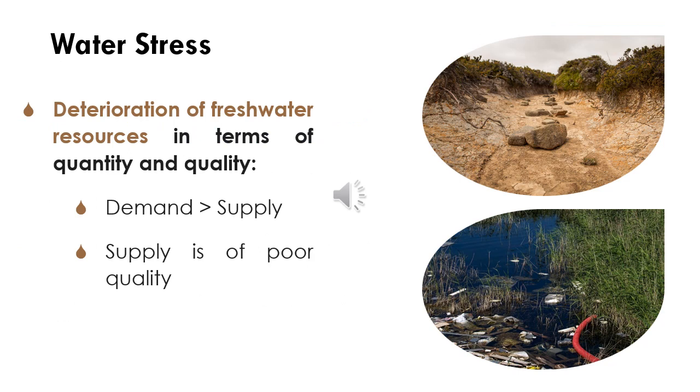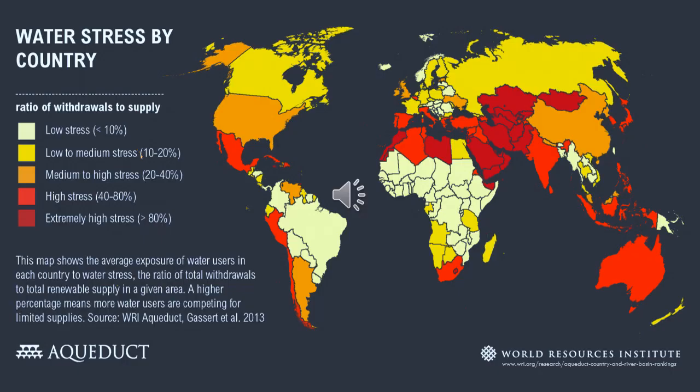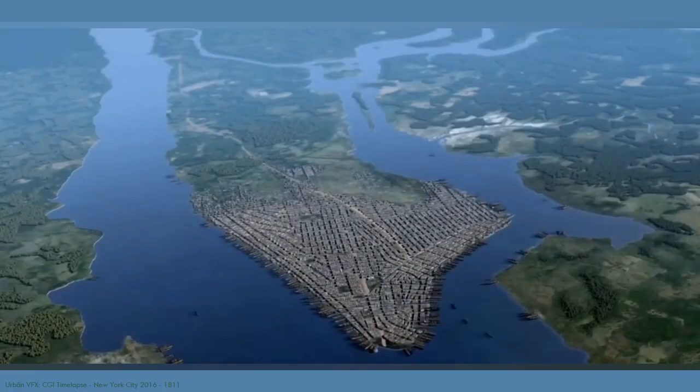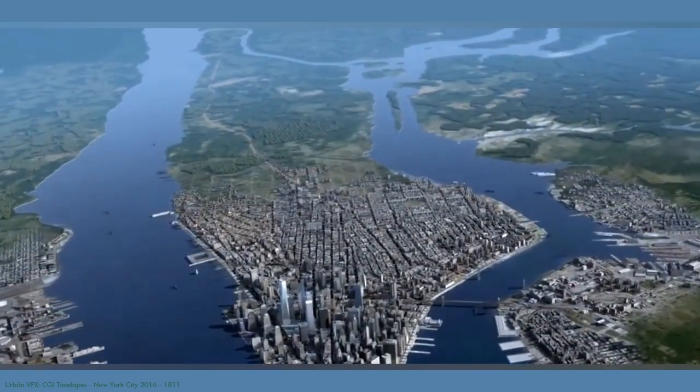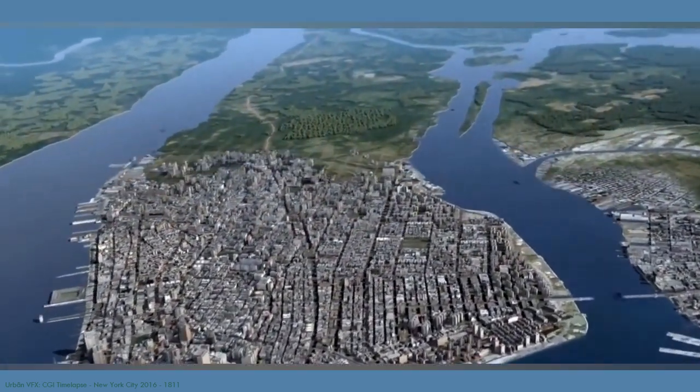Water stress is the term used to describe the deterioration in quantity and/or quality of freshwater resources. According to the World Resources Institute, over 2 billion people worldwide currently live in water-stressed areas. 25 countries housing one quarter of the global population face extremely high water stress each year, regularly using up their entire available water supply. Over the past century, global demand for water has surged by 600 percent, driven by population growth, economic progression, and shifts in consumption habits.